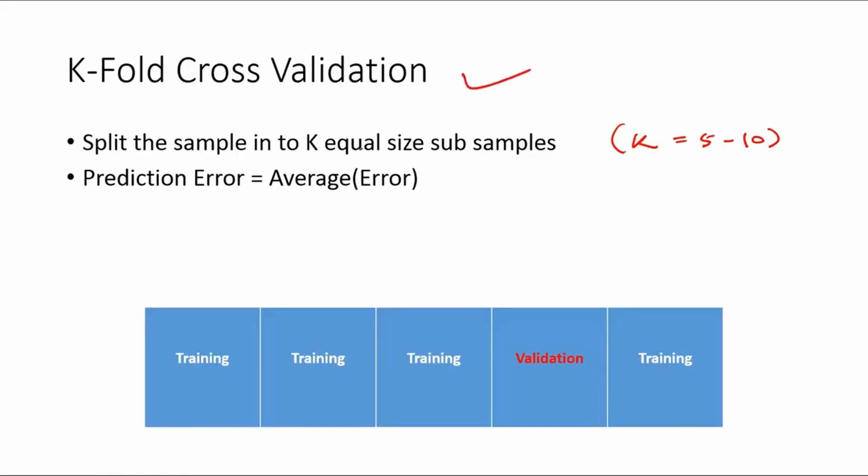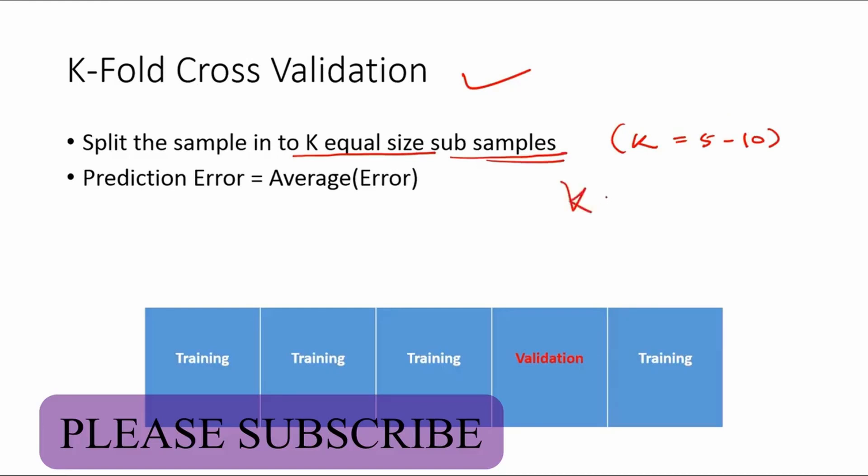K-fold cross validation is the type of cross validation in which you split the sample into k equal sizes, k equal subsamples, and k can take any number.